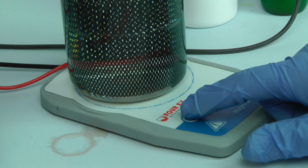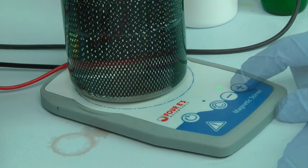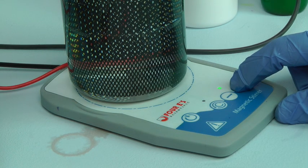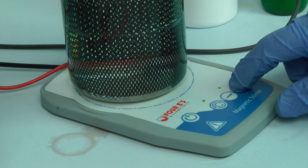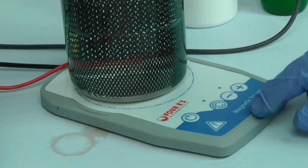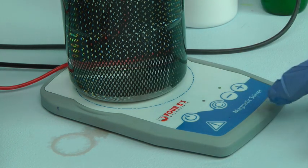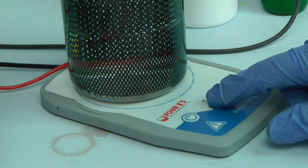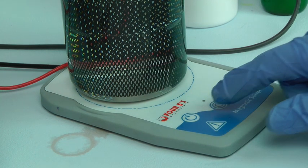Plug in the stirrer and turn it on by pressing the button on the left. To achieve the correct stirring rate, press the button on the right three times. You'll also need to activate the reverse stir feature by pressing the button second from the left.